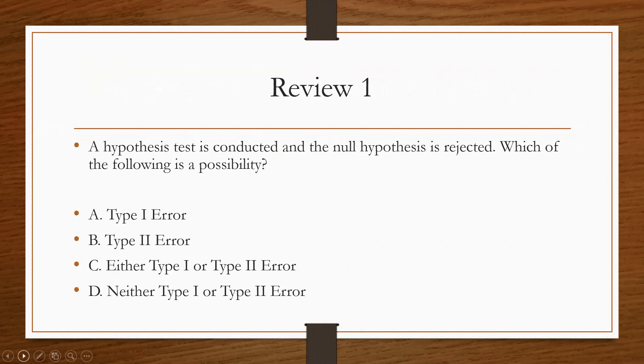And I think with that, we're already on the review. So yeah, as I said, it's a pretty short lesson. The first one: a hypothesis test is conducted and the null hypothesis is rejected, which of the following is a possibility? Alright, yep, you guys, it's just going to be Type I error. Congrats, next up.